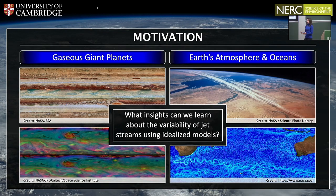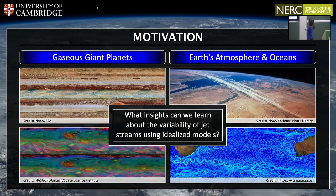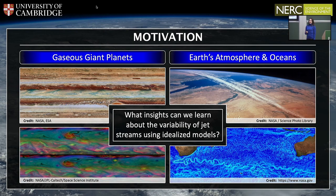Jets naturally arise in a variety of different systems throughout the solar system. They're observed in the atmospheres of the gaseous giant planets, for example on Jupiter and Saturn. On Earth, we have the mid-latitude jet stream in the Earth's atmosphere, and there are multiple jets in the Antarctic circumpolar current in the oceans. The mid-latitude jet stream plays a key role in our climate system, so understanding its behaviour and variability is one of the key factors towards understanding our climate.